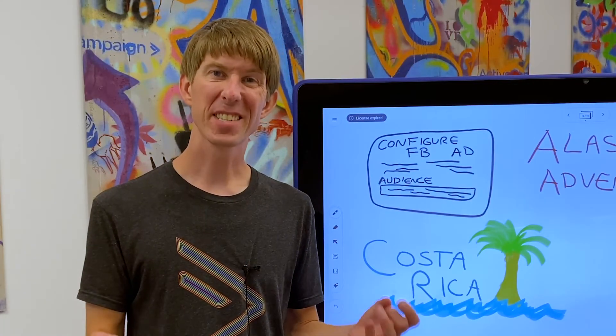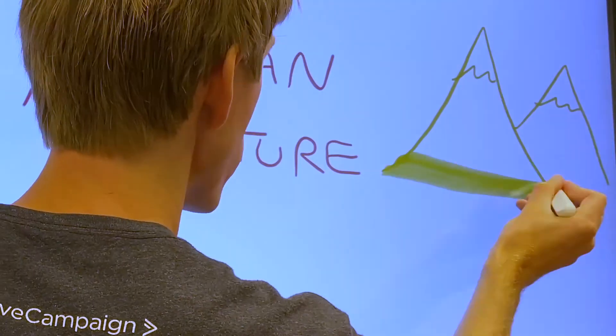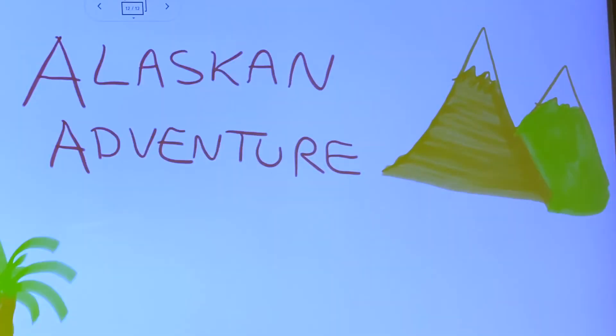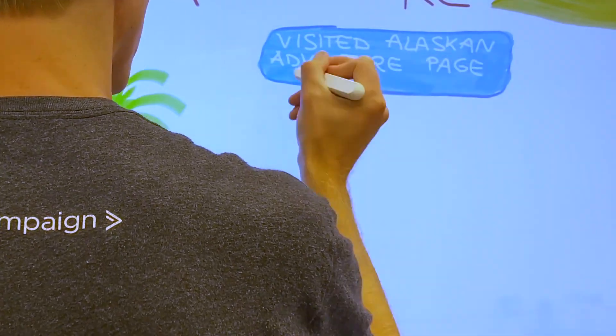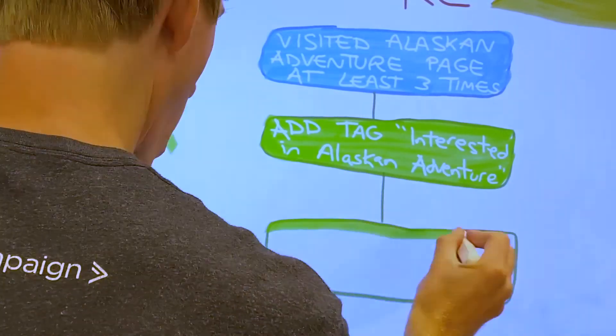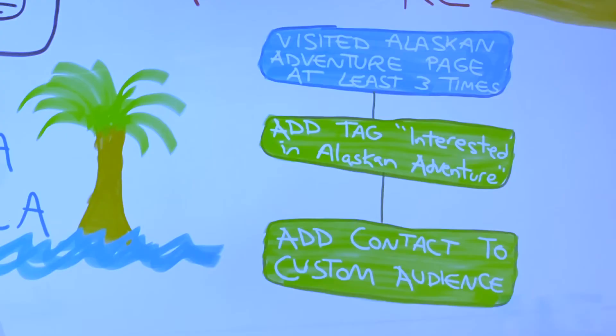What if a contact's interests change? What if the contact is no longer interested in your Costa Rica vacation package and becomes interested in your Alaskan adventure? You can use the ActiveCampaign Facebook Custom Audience integration to automatically remove a contact from the Costa Rica custom audience and add them to the Alaskan Adventure custom audience. The contact will now see Facebook ads for the Alaskan Adventure vacation package. And with this automated setup, you're not wasting any money on contacts who are probably not going to convert. Your ads are better targeted and more efficient.